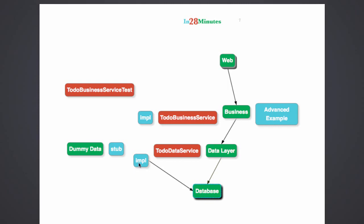That's the reason why we don't want to use the real implementation of the to-do data service, but instead use a stub. We'll look at how you can use a stub to run the to-do business service test. We'll also look at how you can run the same thing using a mocking framework — instead of creating a separate stub file, there is a possibility of using a mocking framework like Mockito. We'll also provide a link to where you can find further information on writing unit tests with Mockito.